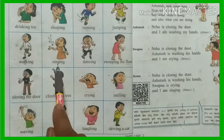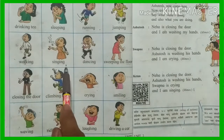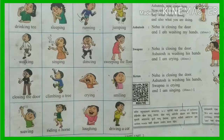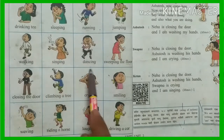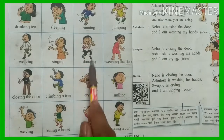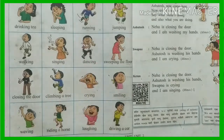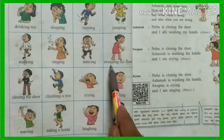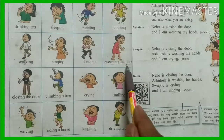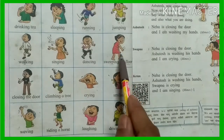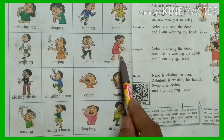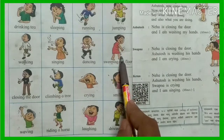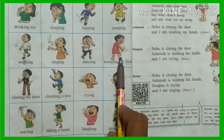Next picture: Singing. S-I-N-G-I-N-G. Singing. Next picture: Dancing. Next picture: Sweeping the floor. Sweeping means Jhaadne. Floor means Jameen. That girl is sweeping the floor.